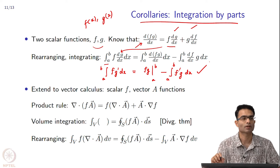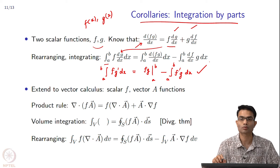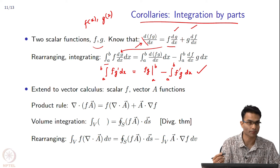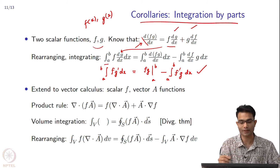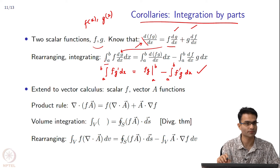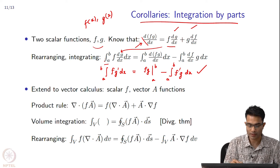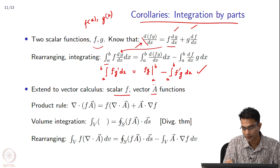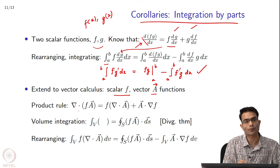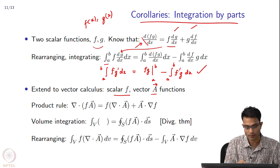In this course, we are going to upgrade this integration by parts to multiple dimensions. When I go to multiple dimensions, I can no longer use d/dx — I will upgrade to a gradient operator. I will no longer integrate just along a line; I may integrate along a volume or a surface. The first step is to take a scalar function f and a vector function A, and find out what the product rule says for vector calculus.